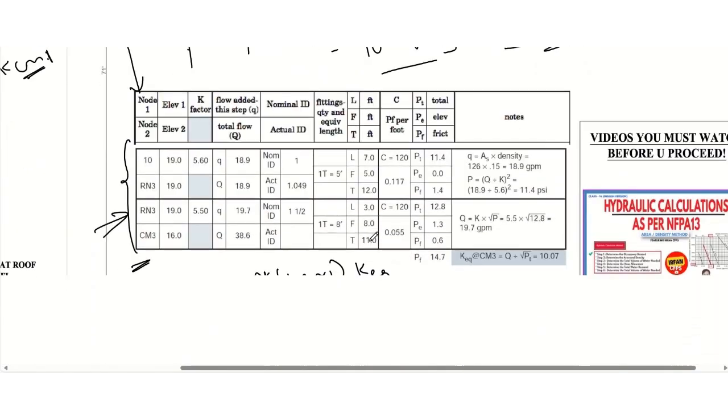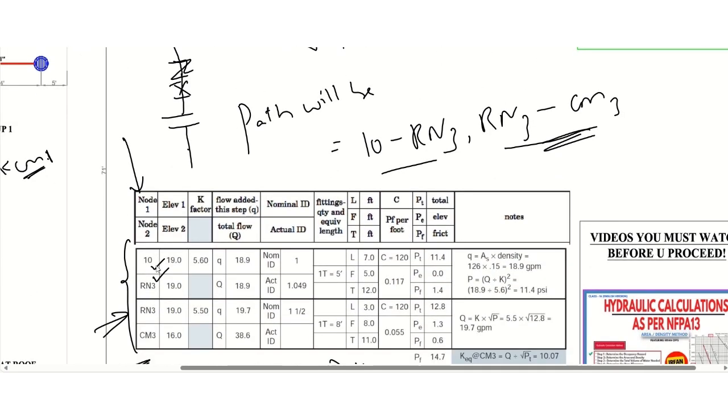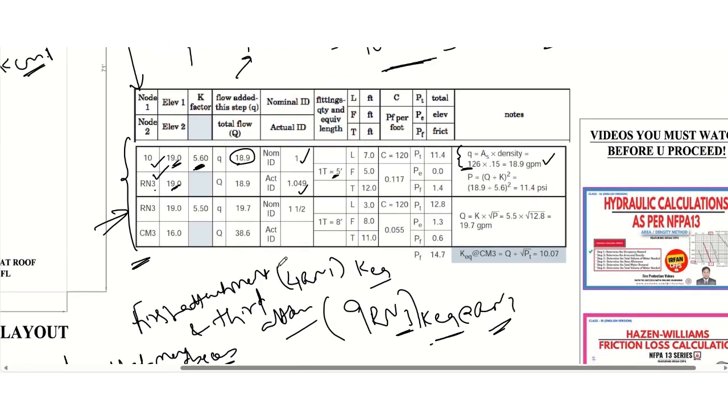Now we will move ahead with this particular case. Here you can see we have 10 to RN3. So the path will be 10 to RN3. 10 is at 19 feet elevation. RN3 is also at the same height. So the K factor here is 5.6 for the sprinkler, and the flow will be 18.9 GPM, which we calculated from this particular formula. And then we have nominal ID 1 and actual ID 1.049. And here we have one T as you can see, so you need to consider this T once again. We have T, so the equivalent length is five feet since the pipe size is one inch.